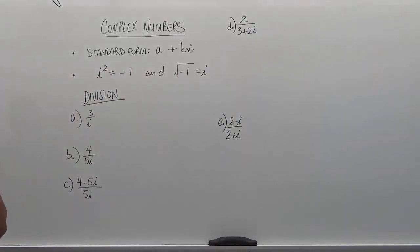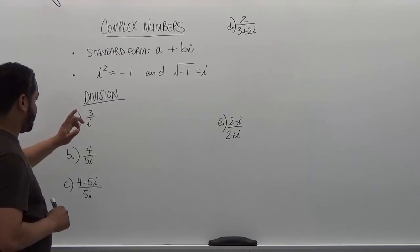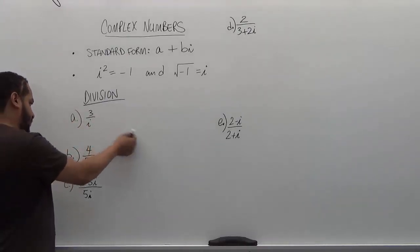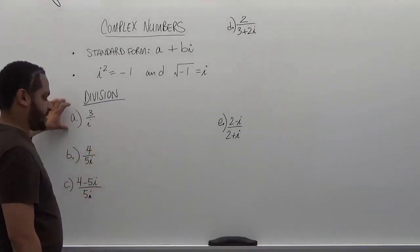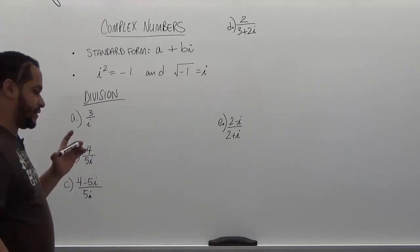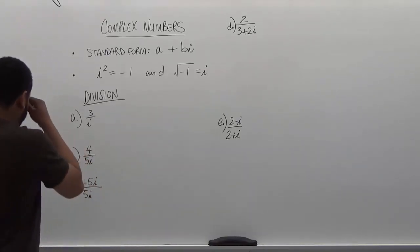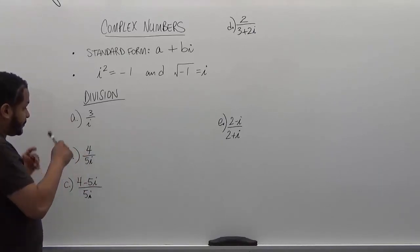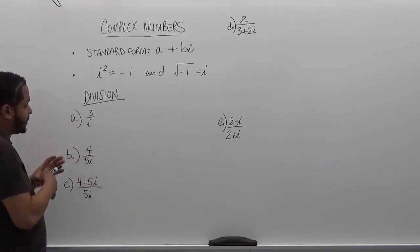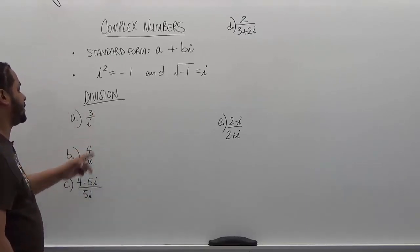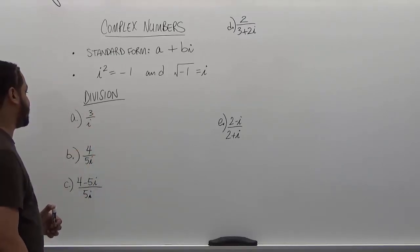Let's continue with this division series, the five problem series set. We have three divided by i as the first problem. This is the most basic form of rationalizing a denominator that we can get. To rationalize this denominator, we'll be multiplying the top and bottom by the i term alone, since it's a singular term on the bottom.